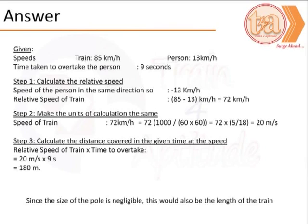Step 1 is calculation of the relative speed. The direction of the person and the train are the same, so we would need to subtract the speed of the person from the speed of the train to calculate the relative speed. In this case, it is 72 km per hour.